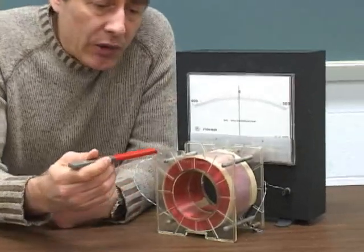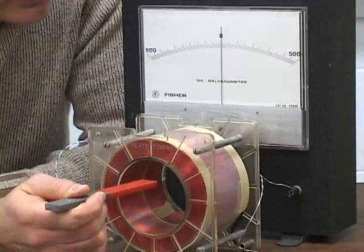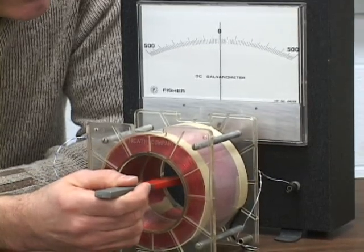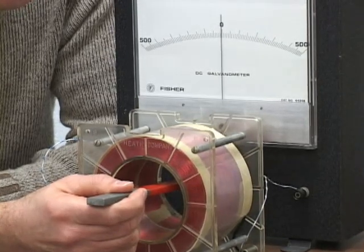I will start by taking the north side of the magnet, which is painted red, and move it into the coil. When I do this, the current flows in such a way that the needle moves to the right, but then stops.